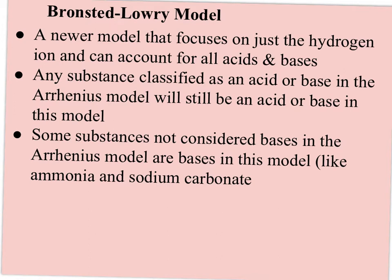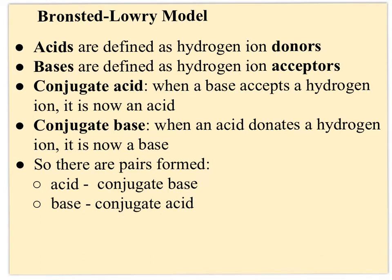The newer model is the Bronsted-Lowry model, developed by two separate people with basically the same ideas who combined their work. It focuses on just the hydrogen ion and accounts for virtually all acids and bases. Any substance classified as an acid or base in the Arrhenius model will still be one in this model. Acids are now defined as hydrogen ion donors — anything that gives up an H+ when in solution is an acid — and the hydrogen ion acceptors are the bases.